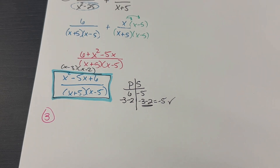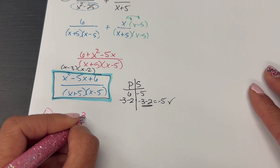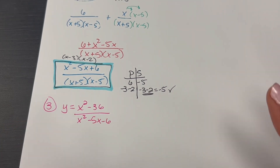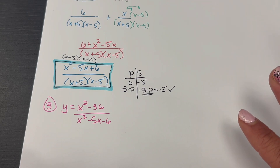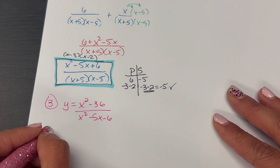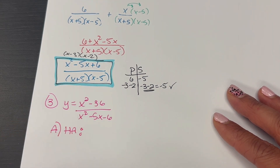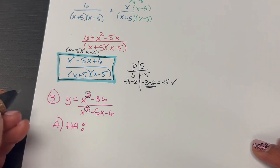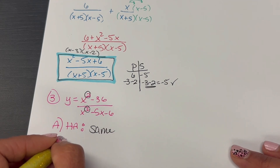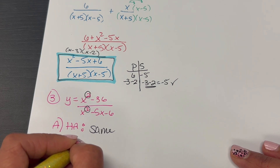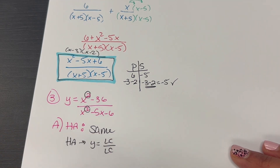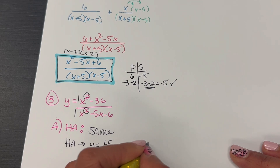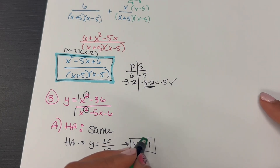Number 3. Given the function Y equals X squared minus 36 all over X squared minus 5X minus 6, determine the equation for its horizontal asymptote. So part A is the HA. I've got the same degree top and bottom, which means the HA is Y equals the leading coefficient over the leading coefficient — they're both 1s. 1 over 1 is 1, so Y equals 1 is the horizontal asymptote.